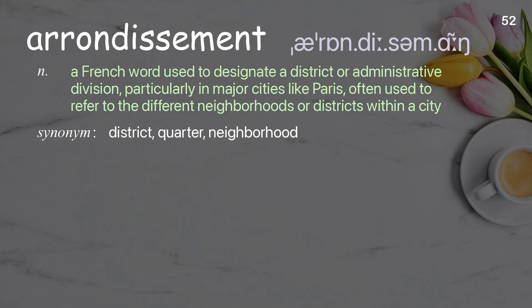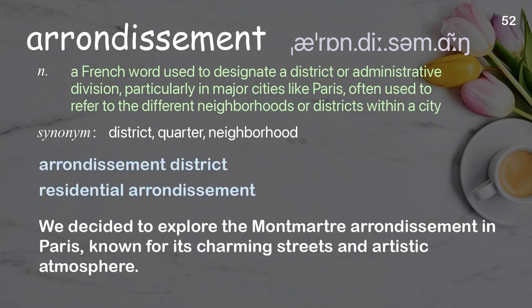Arrondissement: a French word used to designate a district or administrative division, particularly in major cities like Paris; often used to refer to the different neighborhoods or districts within a city. Examples: arrondissement district; residential arrondissement; we decided to explore the Montmartre arrondissement in Paris, known for its charming streets and artistic atmosphere.